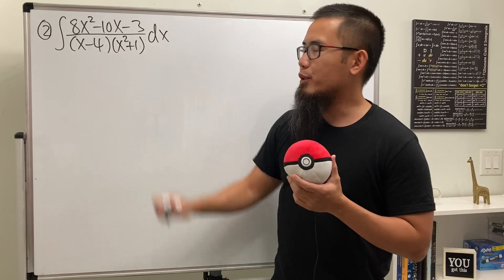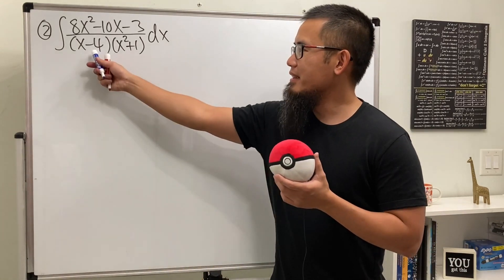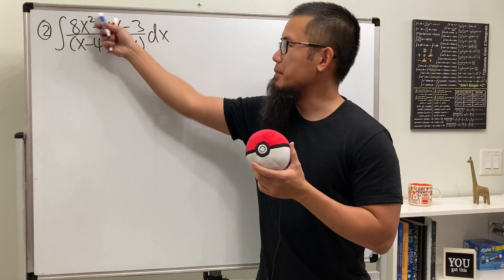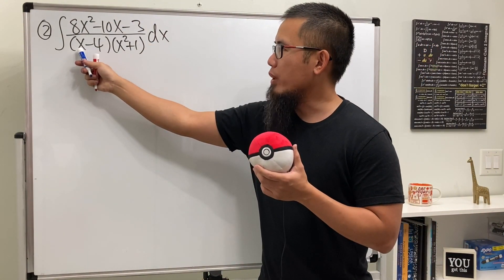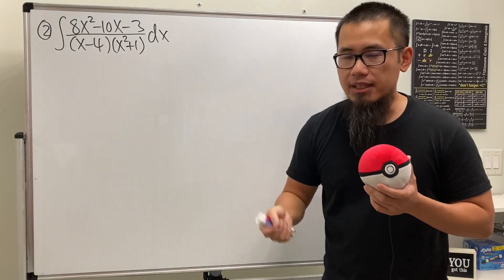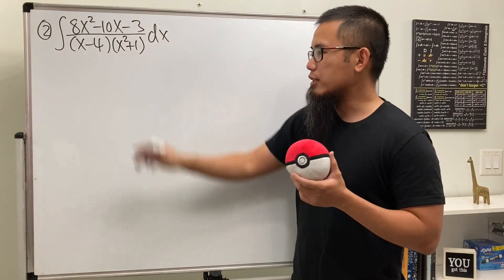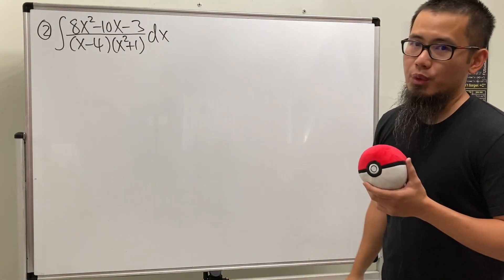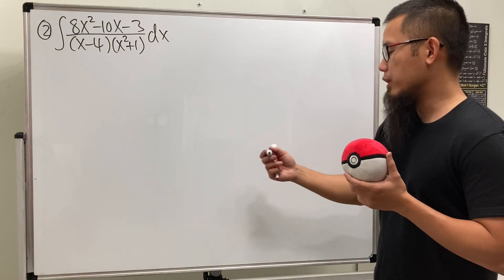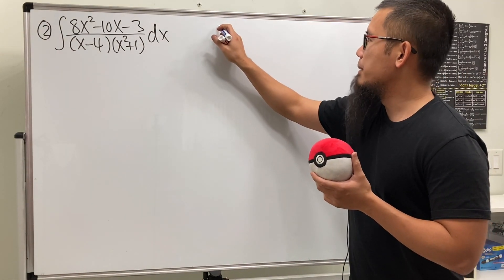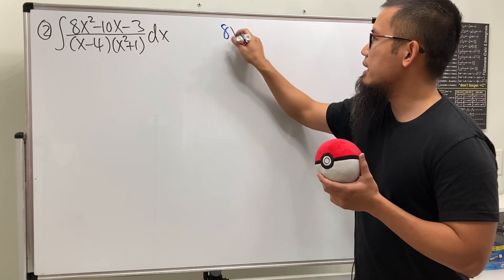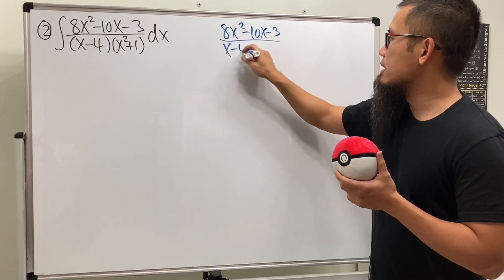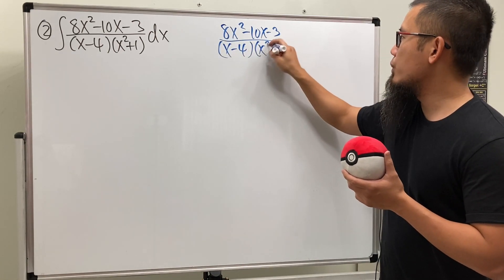For the second integral, we see the denominator has already been factored, which is nice. The degree on the top is 2, and the degree on the bottom — since (x minus 4)(x squared plus 1) gives x to the third power — the degree is 3. Since 2 is less than 3, we can just proceed. We have 8x squared minus 10x minus 3 over (x minus 4)(x squared plus 1).